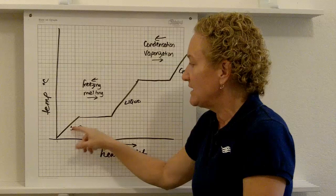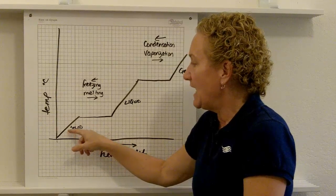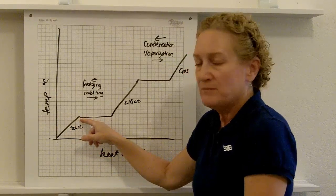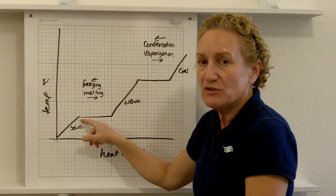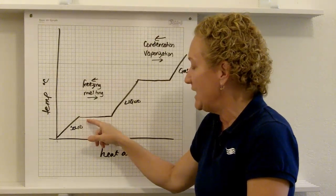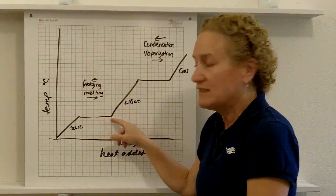So we start out with something that's a solid and we add heat and as we add heat the temperature goes up. But there reaches a point where the temperature no longer goes up even as we are adding heat. And what's happening right here is it's melting.